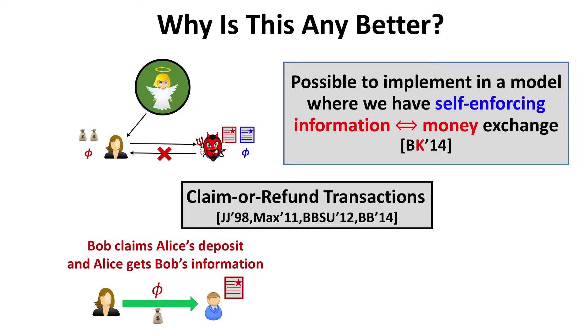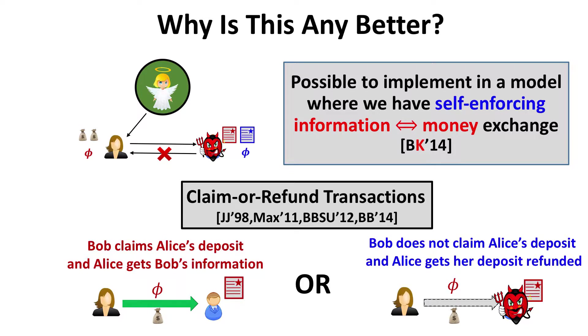In the case where Bob is malicious and won't divulge his information, Alice gets back her money. So either Bob claims the transaction, or the money gets refunded — hence the name claim or refund. This is self-enforcing because information to information exchange is impossible due to Cleve's result, but information to money exchange is different: money has ownership, whereas when you send information to someone else, both of you have the information.